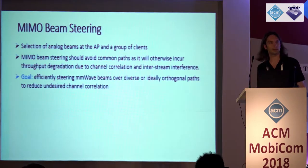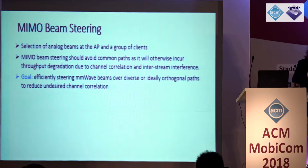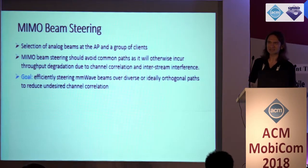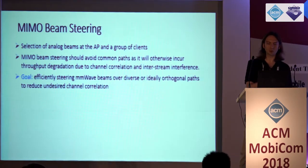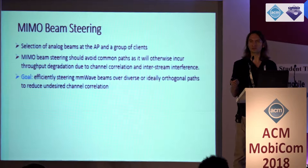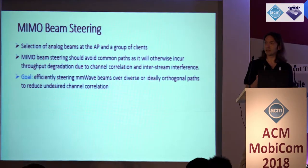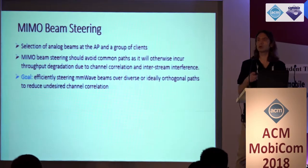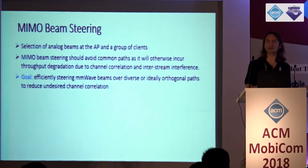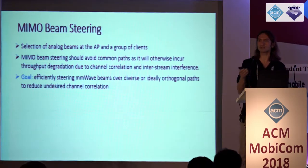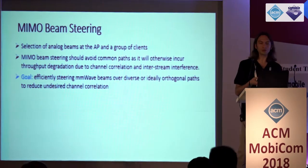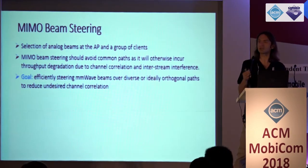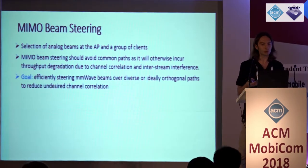In this work, we refer to MIMO beam steering as the selection of analog beams on the access point and a group of clients. The idea is that analog beam steering should avoid common paths, which would cause throughput degradation due to high channel correlation and inter-stream interference. The goal is to efficiently steer millimeter wave beams over diverse or ideally orthogonal paths to reduce these undesired channel correlations.